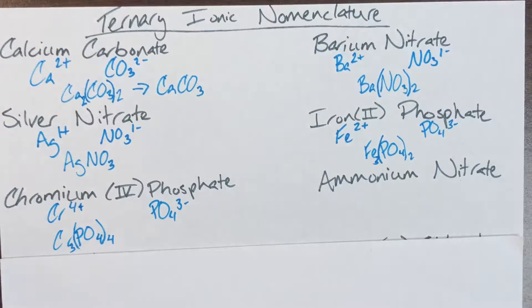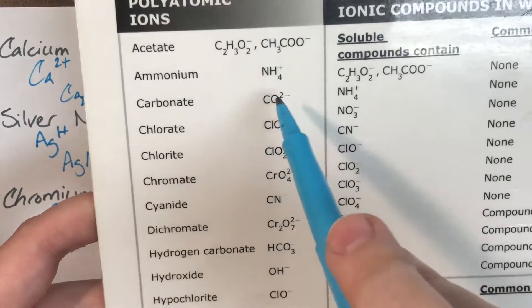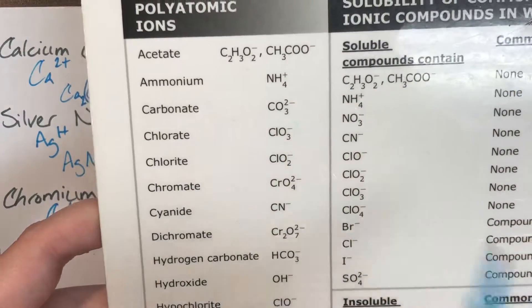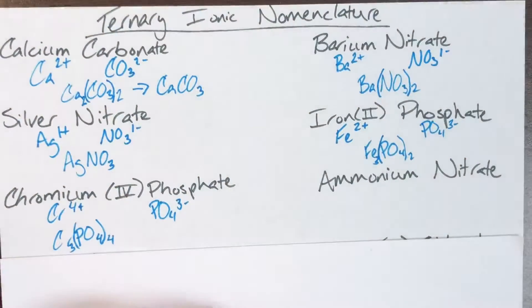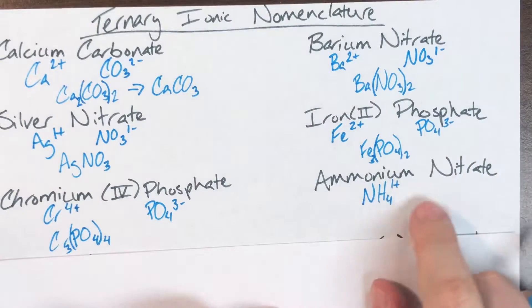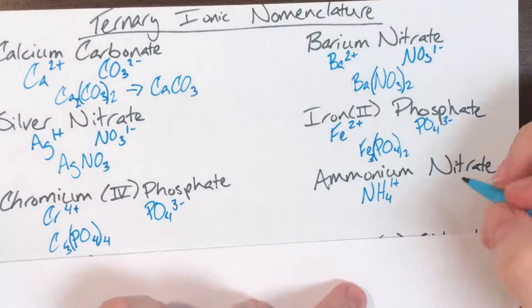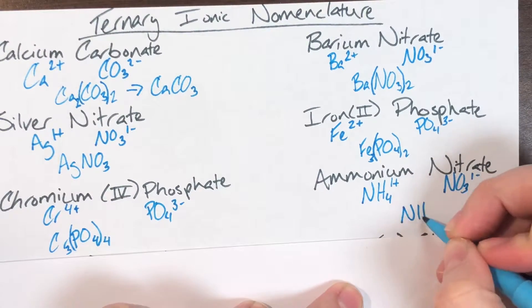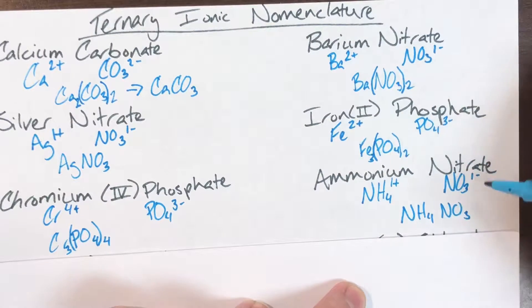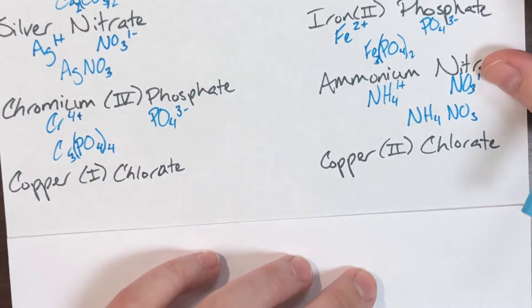Ammonium nitrate: ammonium cannot be found on the periodic table because it is an exception to the polyatomic ion nomenclature rules — it is the one and only positive polyatomic ion. Ammonium is NH₄⁺. Nitrate is NO₃⁻. Writing NH₄NO₃ and exchanging charges for subscripts: both charges are 1 so no subscripts are written, giving NH₄NO₃ as the final formula.